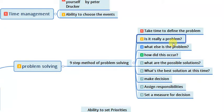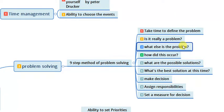The third method is to ask: what else is the problem? The problem you are looking at might not be the real problem for people. Find out the real problem people are actually facing. Many times people come up with a solution that doesn't match the actual problem — this is a real reason for business failure. The fourth method is to ask: how did this problem occur? If you get to the root of the problem, you can find the solution.